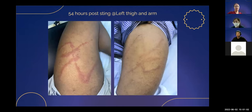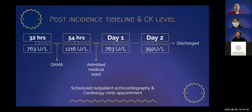A 12-lead ECG showed Wolf-Parkinson-White (WPW) syndrome and left ventricular hypertrophy. Bedside cardiac ultrasound showed good cardiac contractility with no regional wall hypokinesia, but a thickened left ventricular wall. Blood investigations showed raised creatinine kinase of 647 units per litre; troponin I was normal at less than 10. The patient was given IV tramadol 50 mg and saline hydration. On a repeat visit 22 hours later with persistent pain score of 6 out of 10, creatinine kinase increased to 1,216. He was admitted for observation. Throughout admission his condition improved; creatinine kinase reduced to 763 then 392, and he was discharged after two days with outpatient echocardiography and cardiology clinic appointment.